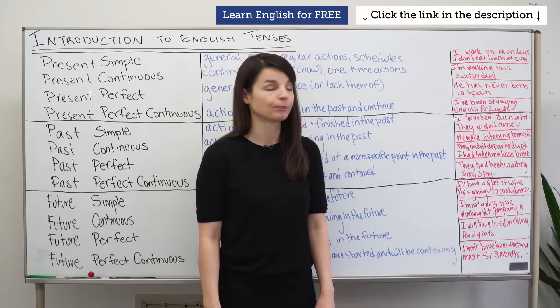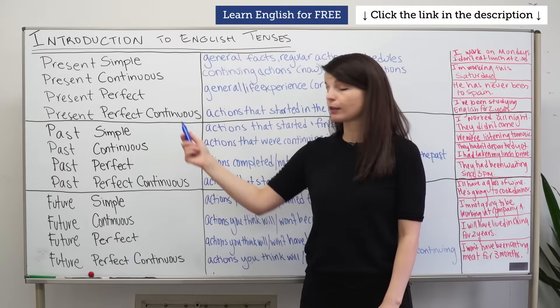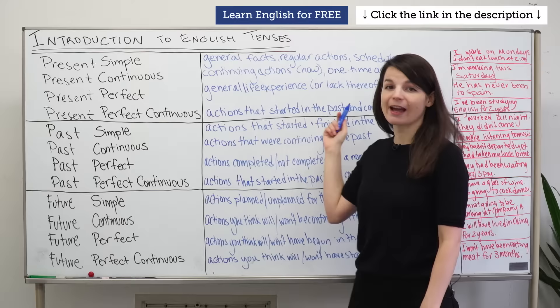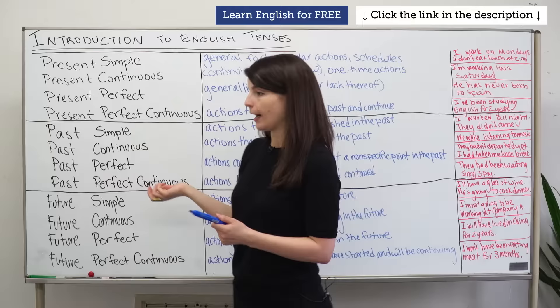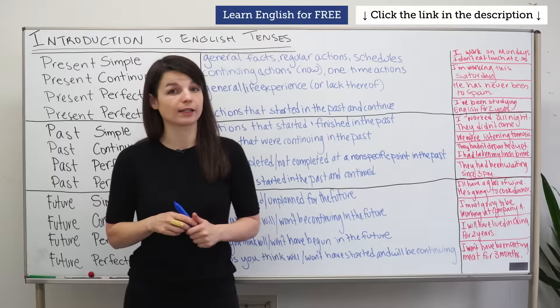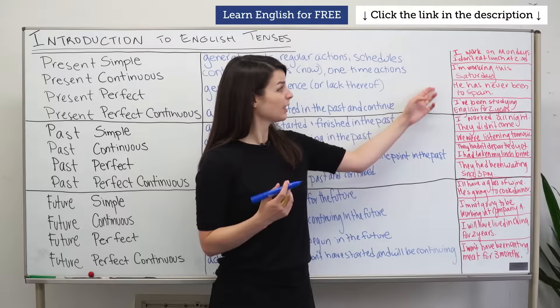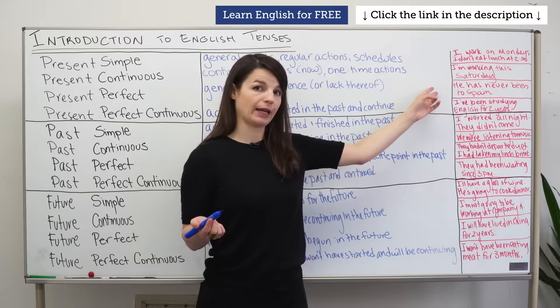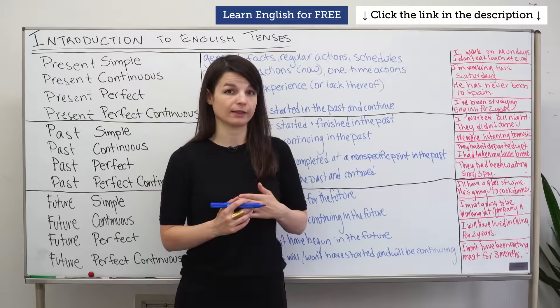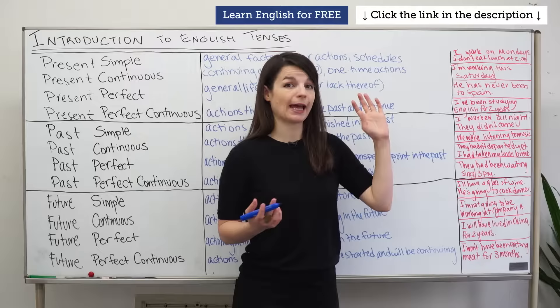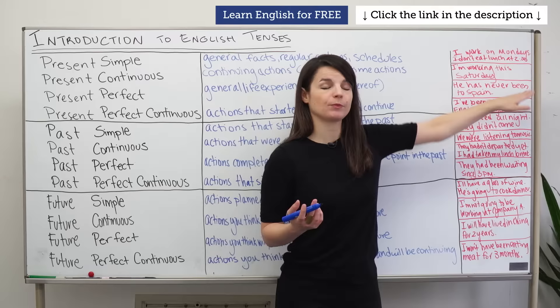The third tense is the present perfect tense. We use it for general life experience or lack thereof — something you did in the past, but not at a specific point in time. A negative example: 'He has never been to Spain.' No life experience of going to Spain. We need to attach 'has' or 'have' before our past participle verb form here.